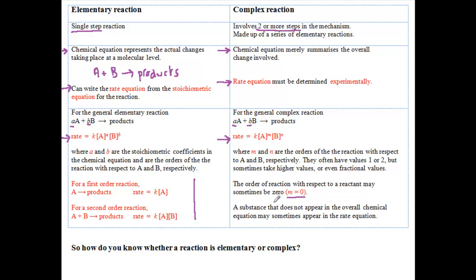Sometimes, however, a substance that doesn't appear in the chemical equation may appear in the rate equation. This might be the product of the reaction or a catalyst such as H plus ions.